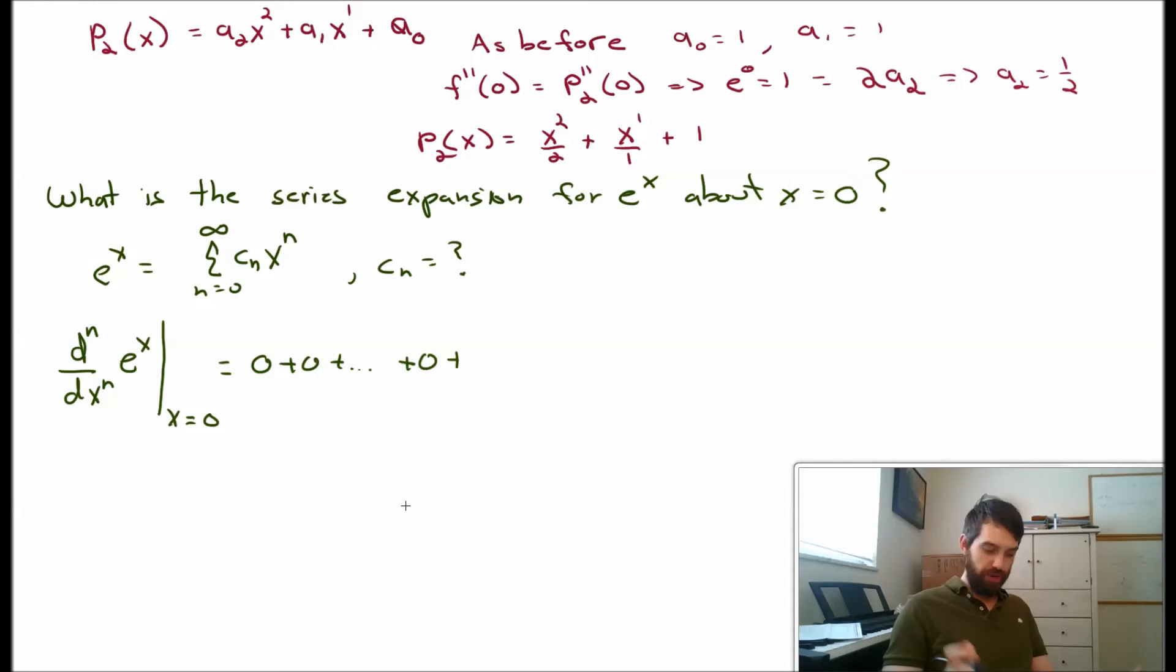Then I get to the x^n term. If I take n derivatives of it, what happens? The n comes down for the first derivative, and I'm left with n minus 1 up top. Then for the second derivative, n minus 1 comes down, and I'm left with n minus 2.